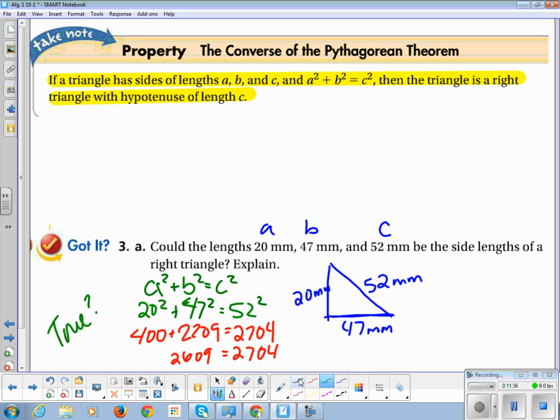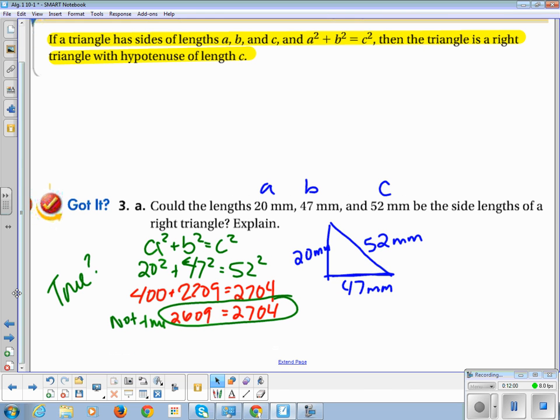So is 2,609 equal to 2,704? Are these two values equal? So if I said I'm going to take 2,704 dollars from your account and replace it with 2,609 dollars, would you think that would be equal? So this is not true. When you get a not true statement that means it is not a right triangle.